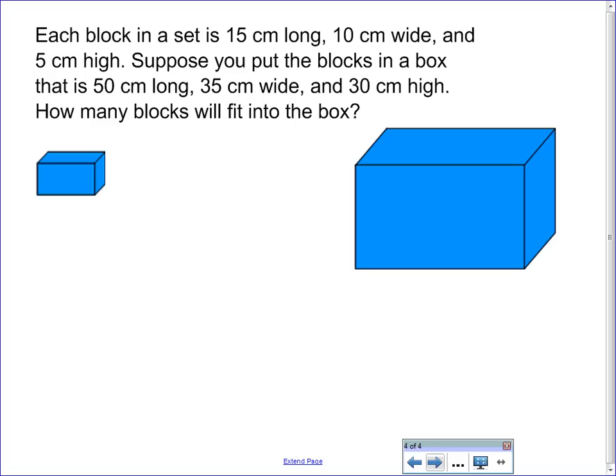The final page is a two-step problem for volume, and we're going to see one of these on the test. This is actually number 8 on page 227 of your textbook. Each block in a set is 15 centimeters long, 10 centimeters wide, and 5 centimeters high. Suppose you put the blocks in a box that is 50 centimeters long, 35 centimeters wide, and 30 centimeters high. How many blocks will fit in the box? Well, before we panic, let's take this one step at a time. Obviously, we're talking about volume. So we can determine that the smaller of our prisms can represent the block. We know that each block in a set is 15 by 10 by 5. So let's stop there.